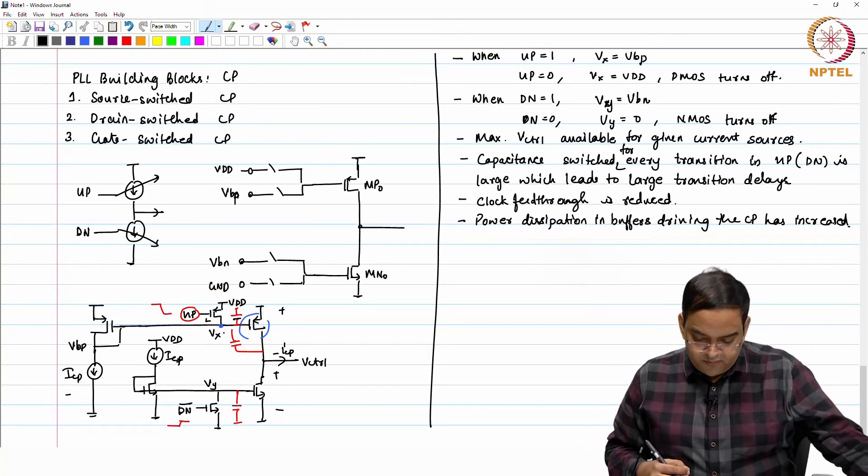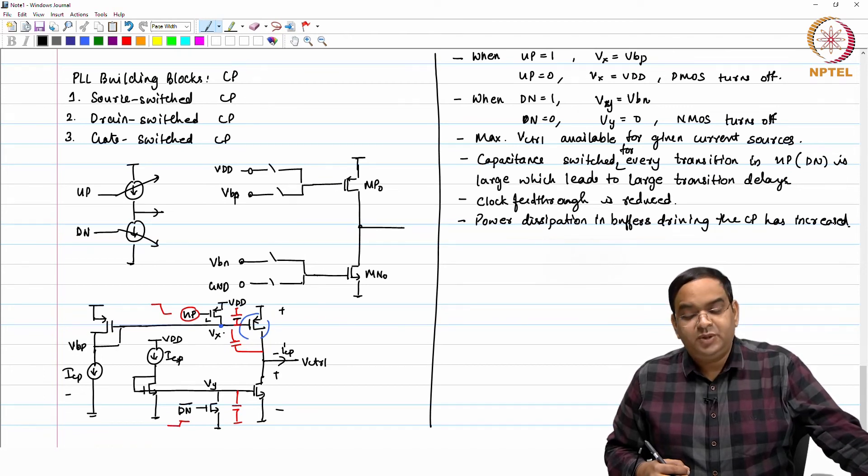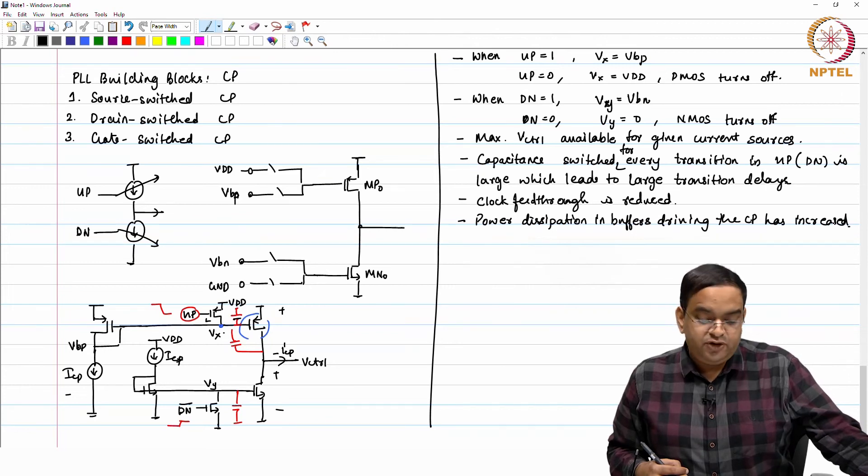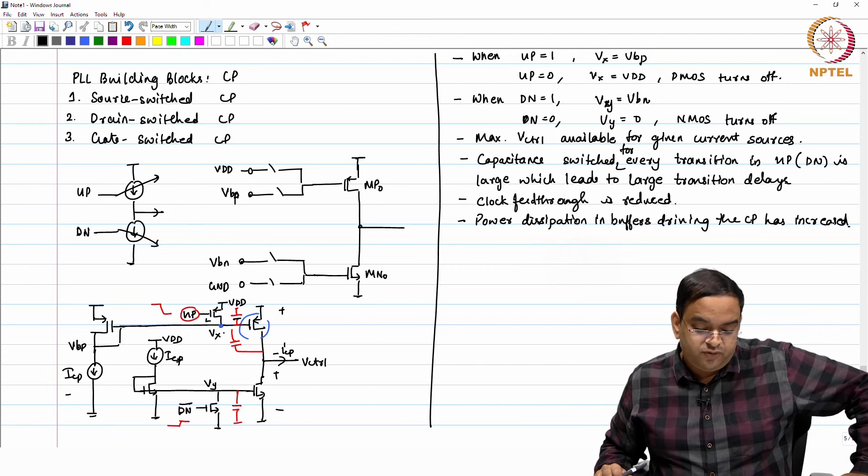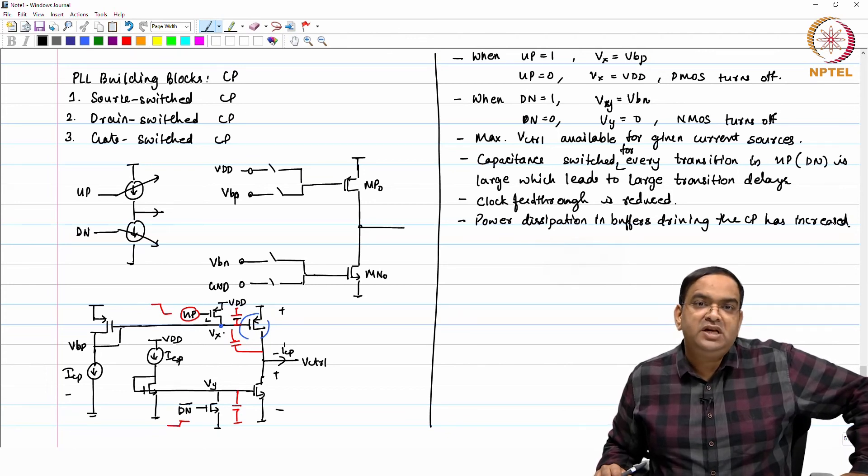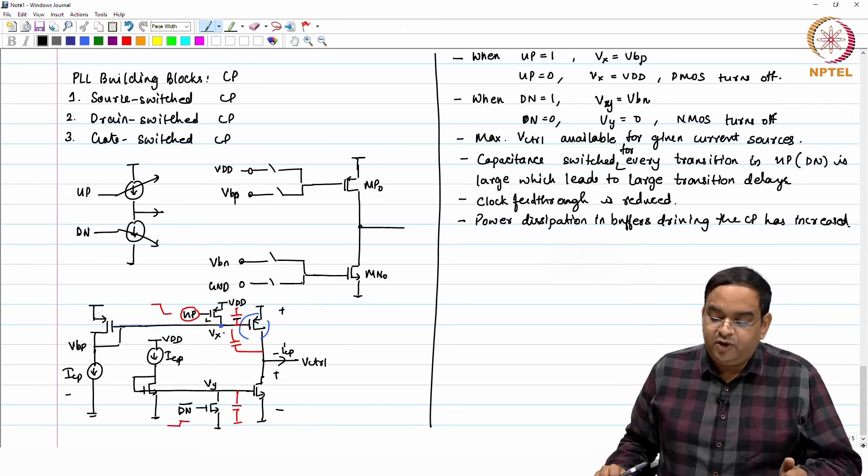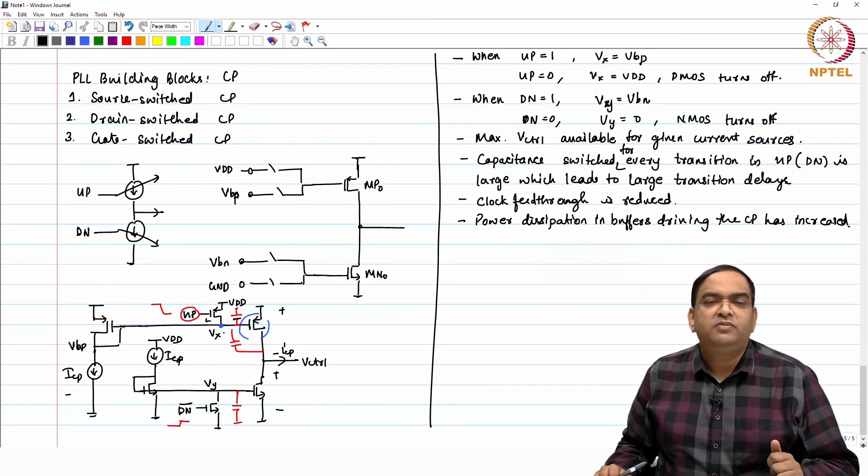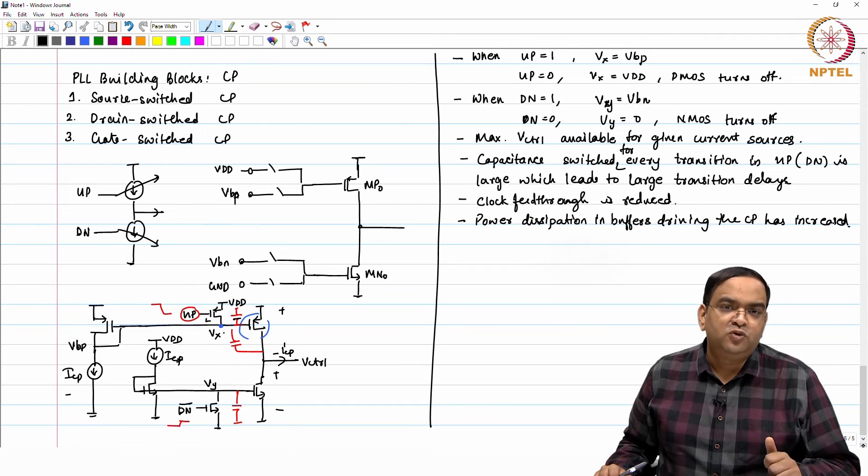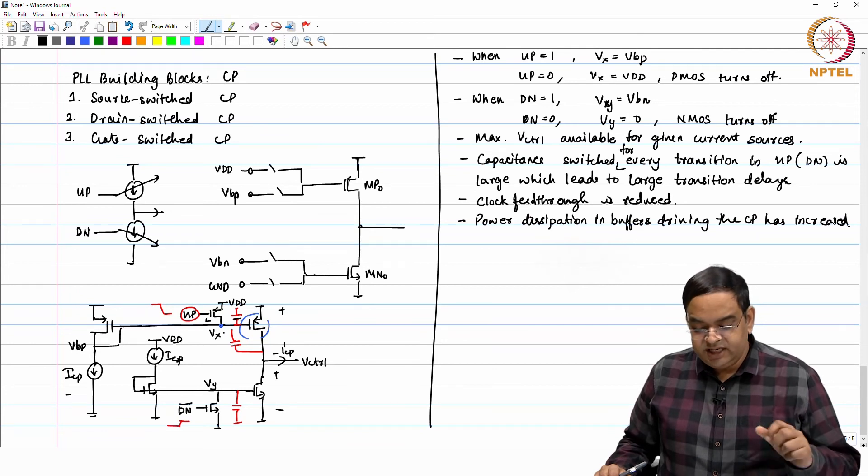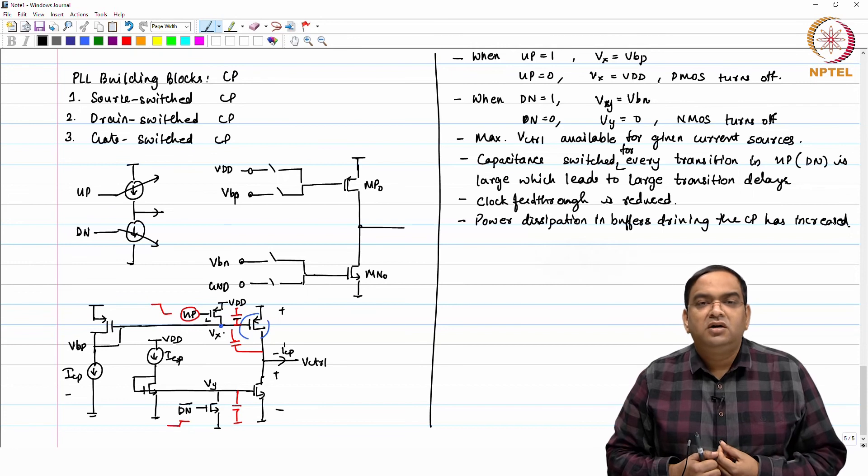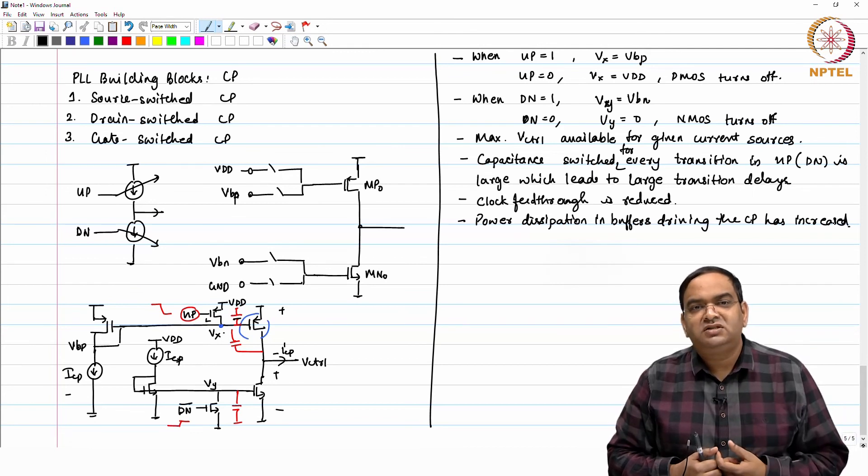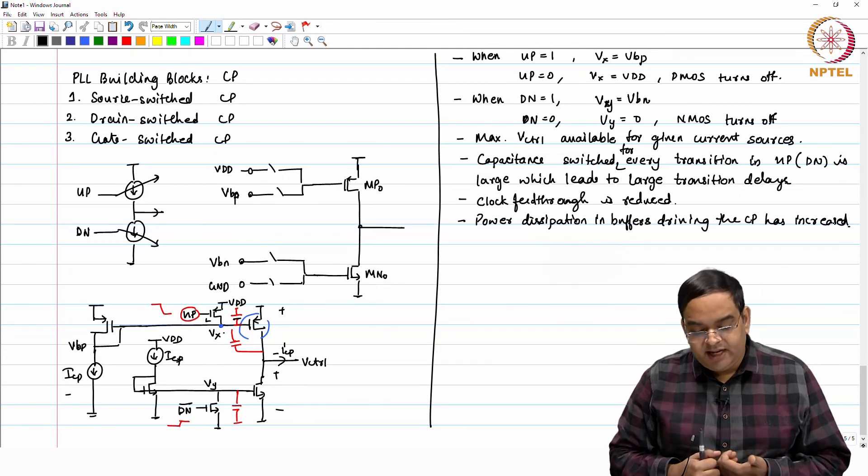What we have seen so far is 3 different kinds of charge pumps: drain switch, source switch and gate switched. Depending on the application depending on our requirement we can use gate switch if we need to have a maximum range for V control and we are not worried about the speed of the transition from your up to the final current output up or down to the final current output. We can use gate switch, source switch is like one of the fastest charge pump which you can have. It does suffer from some amount of clock feed through and some amount of charge sharing also.